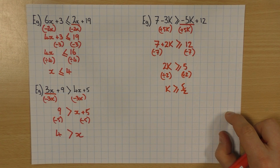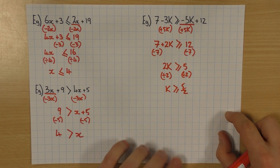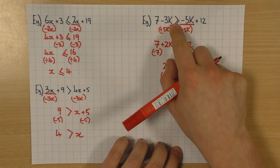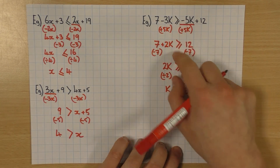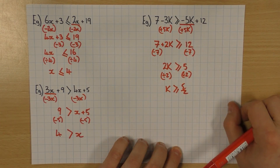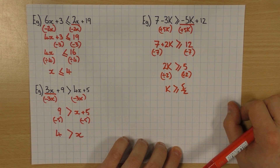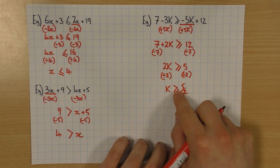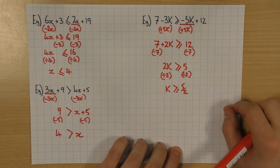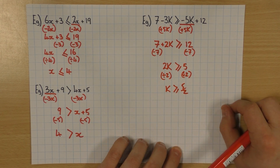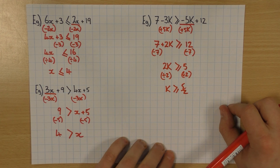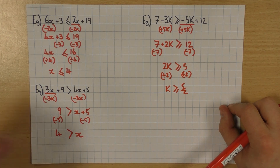And that's how you solve inequalities. It's exactly the same method, and the only thing to be aware of is the inequality symbol instead of an equal sign. And if you times or divide by a negative, you just have to flip it round. Other than that, it's exactly the same. So hopefully that helps guys. Cheers!